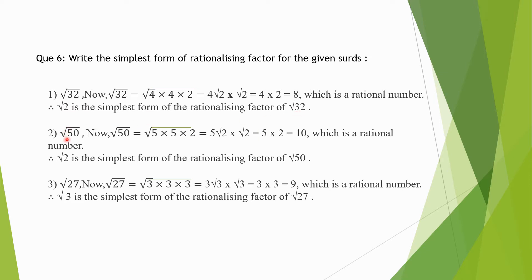Second question: √50. We will factorize √50. That will be equal to √(5×5×2). Square root of 5×5 we will take outside, so we get 5√2. Now when we multiply √2 along with this, we get 5 multiplied to 2, that is equal to 10. Here this is a rational number. Therefore √2 is the simplest form of the rationalizing factor of √50. The number which we have to multiply is the simplest form of rationalizing factor.